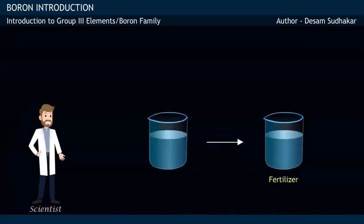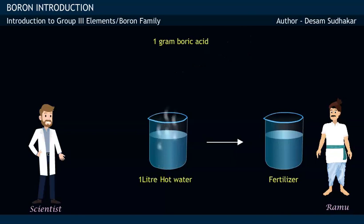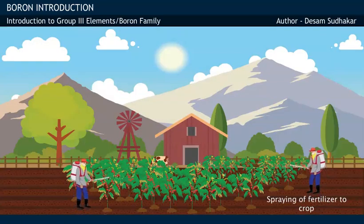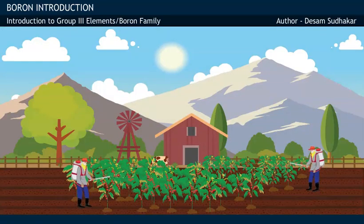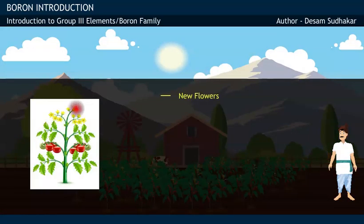The scientist prepares a fertilizer for the farmer by mixing one gram of boric acid in one liter of hot water, and suggests him to apply it in small quantities. After spraying the fertilizer on his crop, the farmer observes new flowers and a greater number of good quality ripened tomatoes.